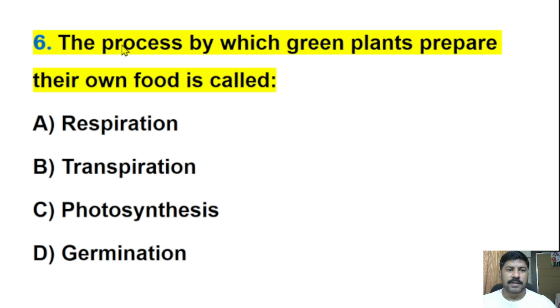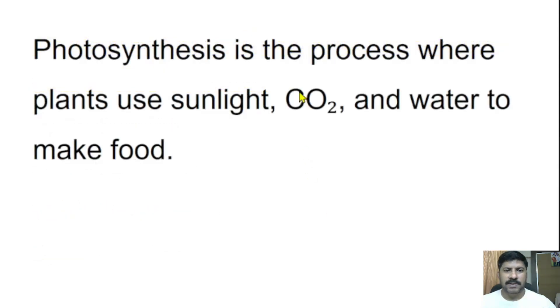Sixth question: The process by which green plants prepare their own food is called? Respiration, transpiration, photosynthesis, or germination? This is an easy question. The correct answer is photosynthesis. Photosynthesis is the process where plants use sunlight, carbon dioxide, and water to make food.